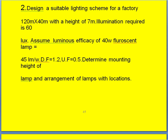Now let us take the second problem. Design a suitable lighting scheme for a factory with area 120 by 40 square meters and a height of 7 meters. Illumination required is 40 lux. Assume luminous efficiency of the 40-watt fluorescent lamp is 45 lumens per watt and depreciation factor is 1.2. Utilization factor is 0.5. Determine the mounting height of the lamp and arrangement of lamps with locations.